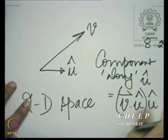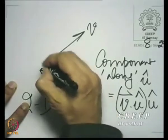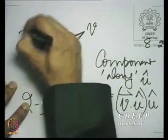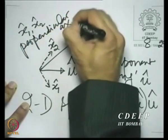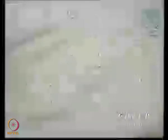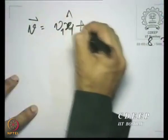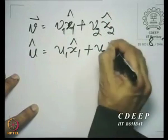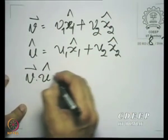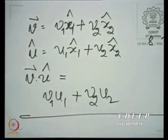How would you find the dot product? Assuming perpendicular axes x1-hat and x2-hat, you express v as v1·x1-hat + v2·x2-hat and u as u1·x1-hat + u2·x2-hat. Then the dot product of v and u is v1·u1 + v2·u2. You multiply the corresponding components of the vectors in each perpendicular direction, then add up all such products.